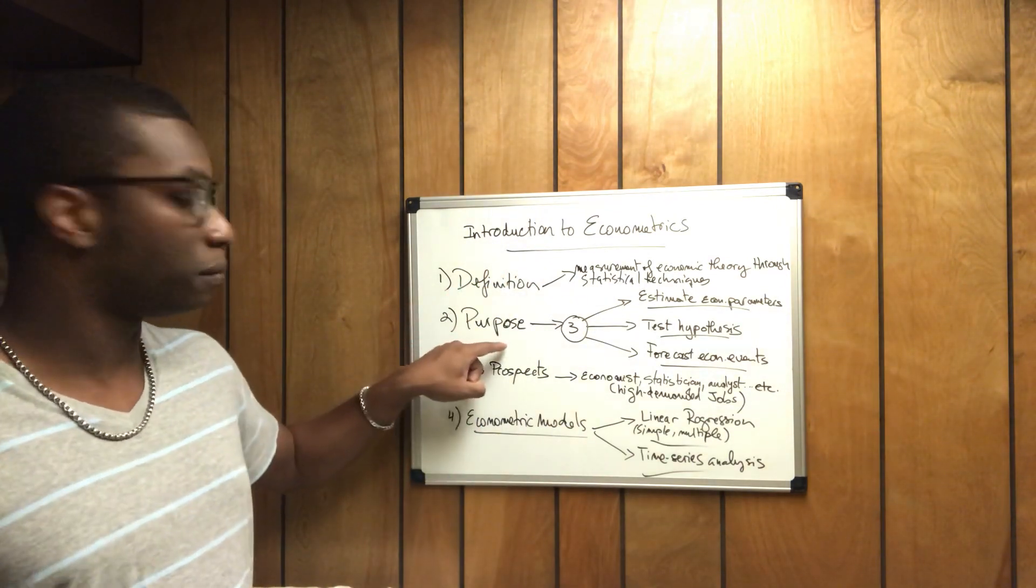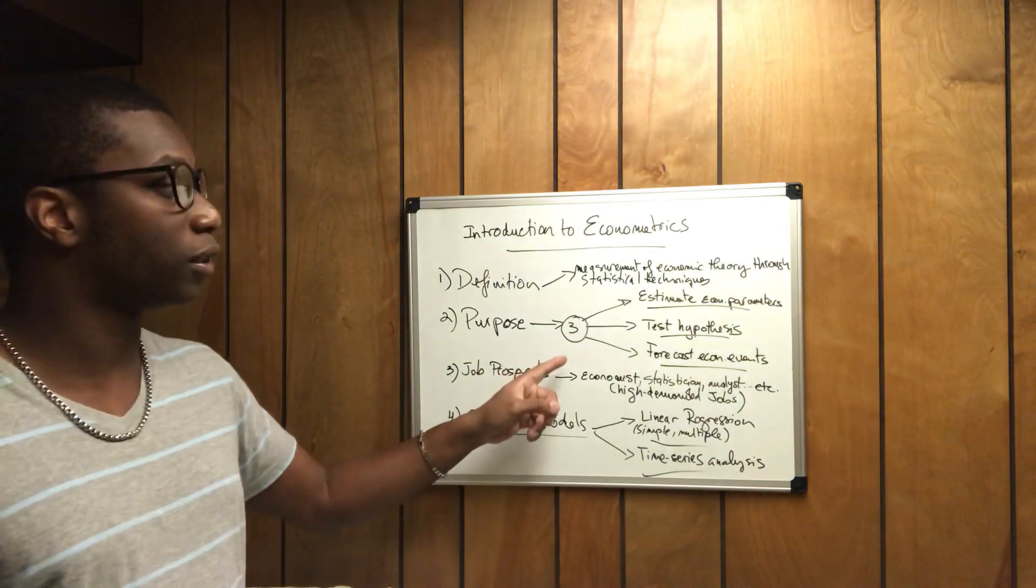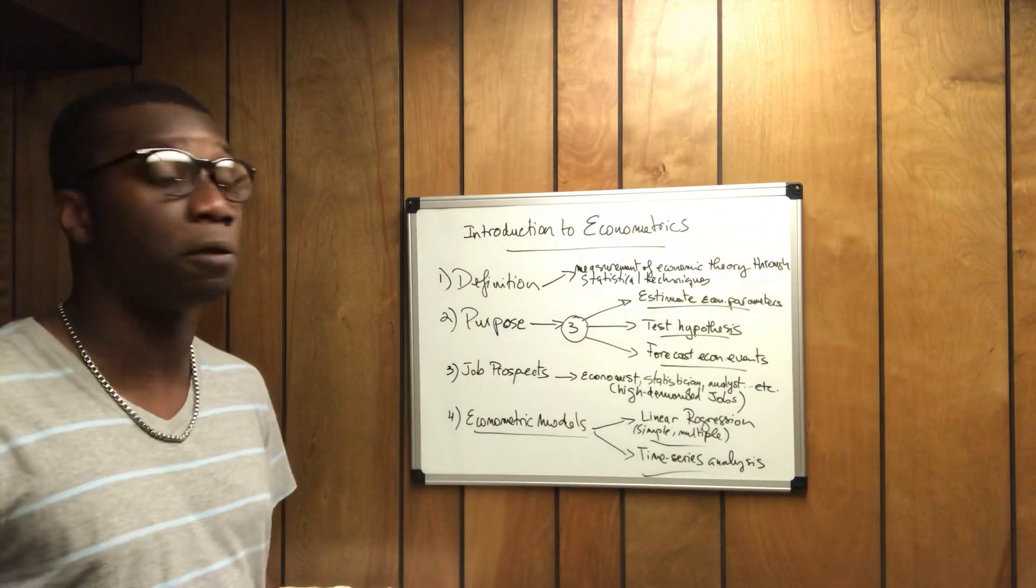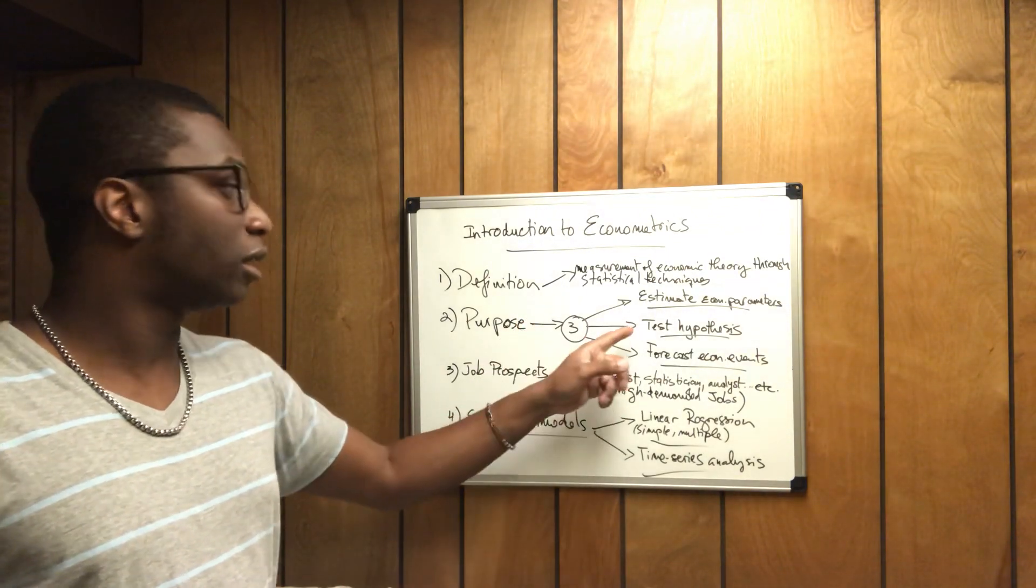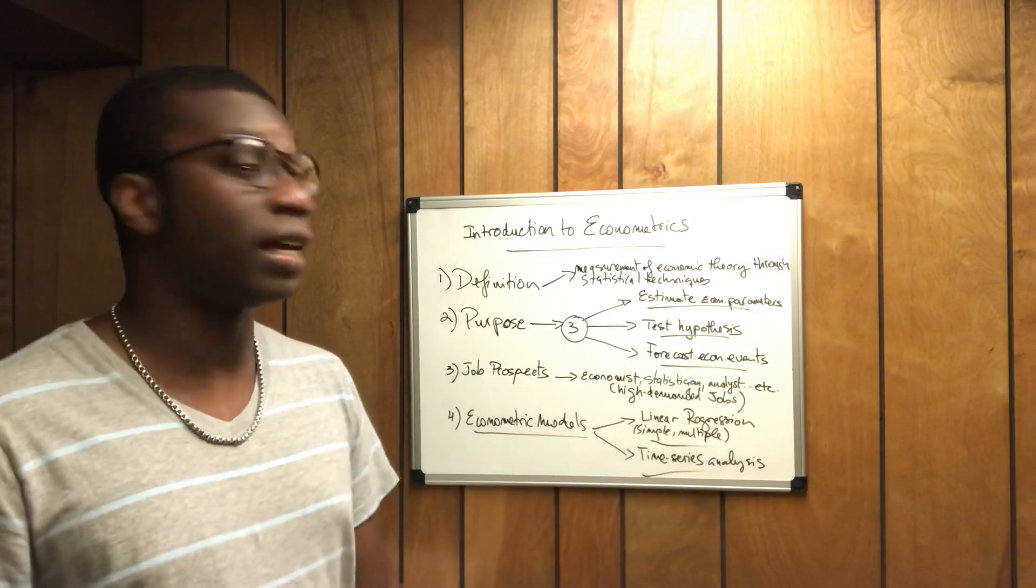That being said, it leads us to the second, which is the purpose of econometrics. It has three purposes. The first is to estimate economic parameters. The second is to test hypotheses. And the third is to forecast economic events.